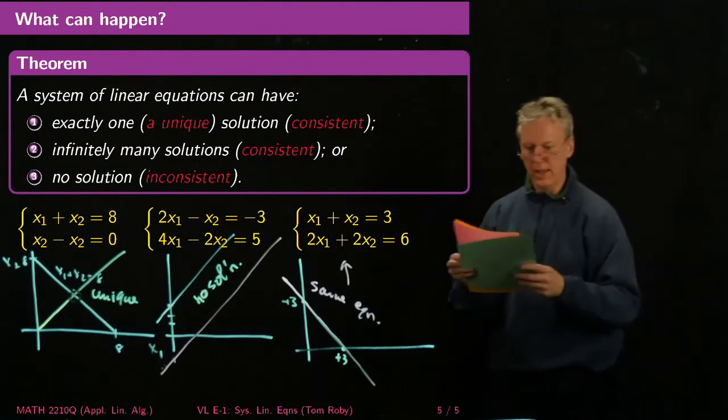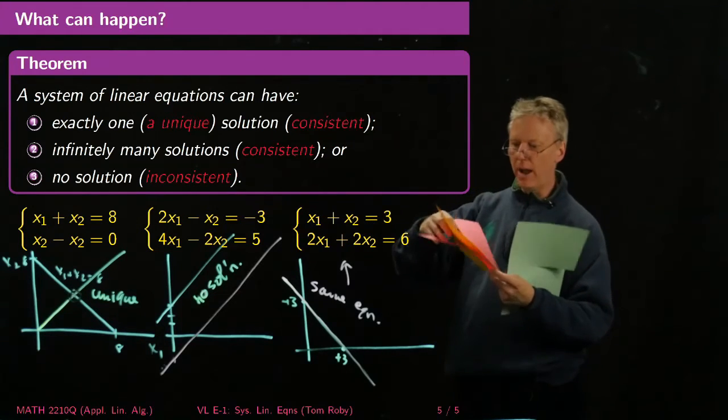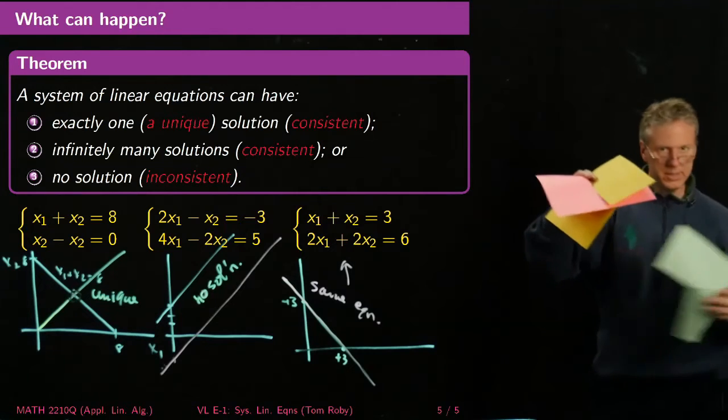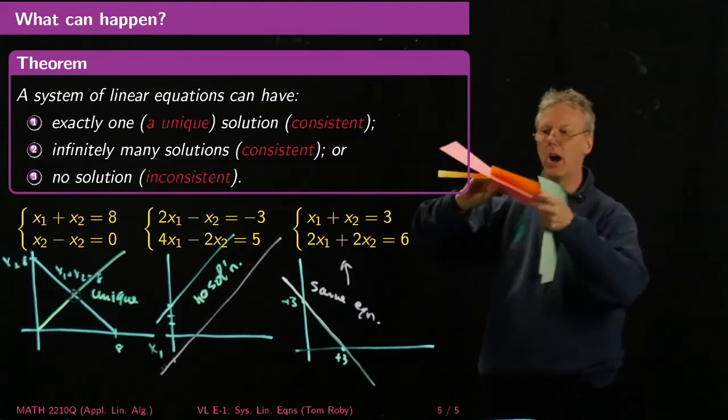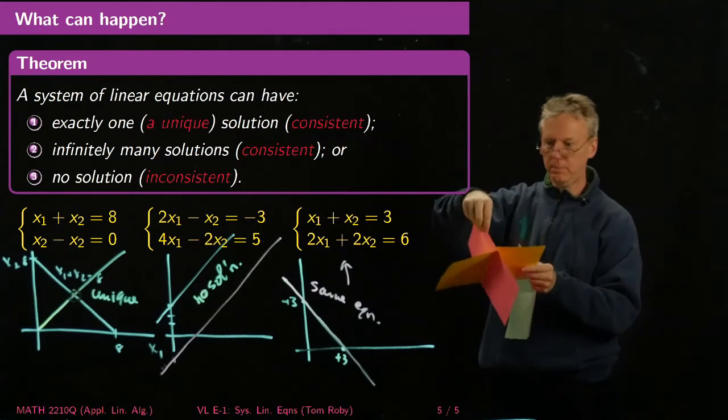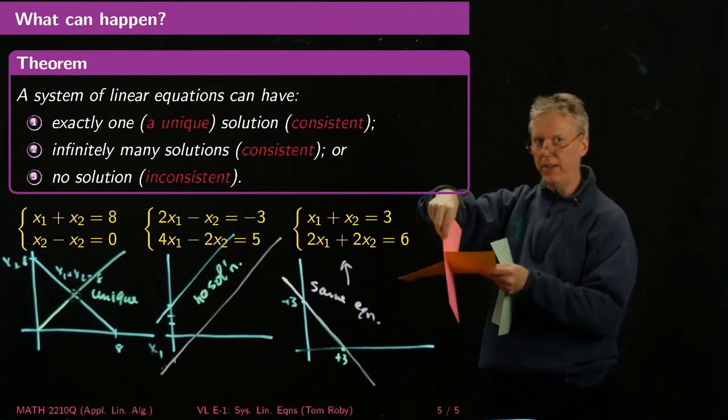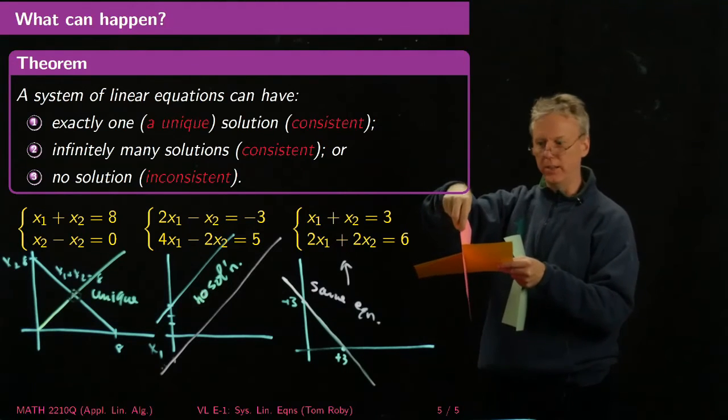Now in two dimensions, the only way that you can have infinitely many solutions is if the lines are the same. But I'm about to show you what can happen in three dimensions. So here are my handy visual aids. So imagine that each of these, no matter how much it flops around, that this cardstock is actually a plane, right?